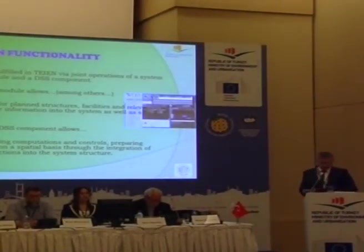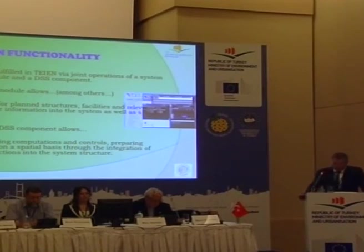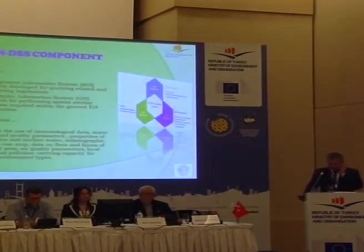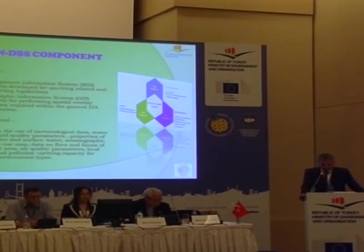TEIAN EIA functions are performed via joint operations of the system model and DSS component. The EIA model allows entries for planned structures and facilities with relevant attribute information into the system, as well as spatial queries. The EIA DSS component allows the personnel of the EIA department to perform computations and controls, prepare reports and spatial analyses through the integration of GIS functions into the system architecture. The DSS component further involves two separate information systems: a management information systems platform for querying related supporting legislation, and a geographic information system platform for performing spatial overlay analysis required within the general EIA mechanism.